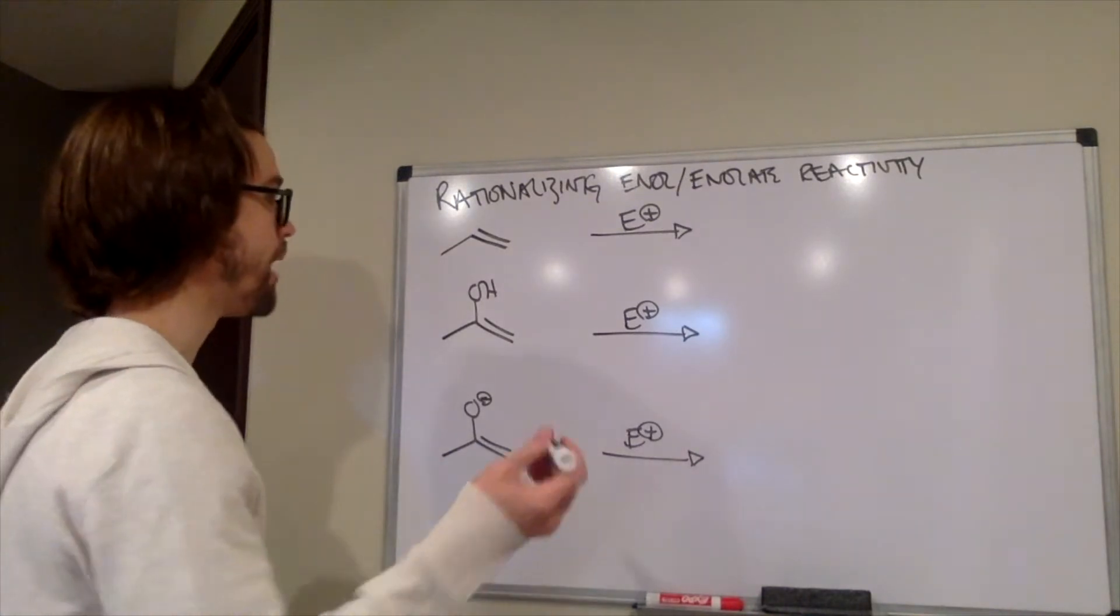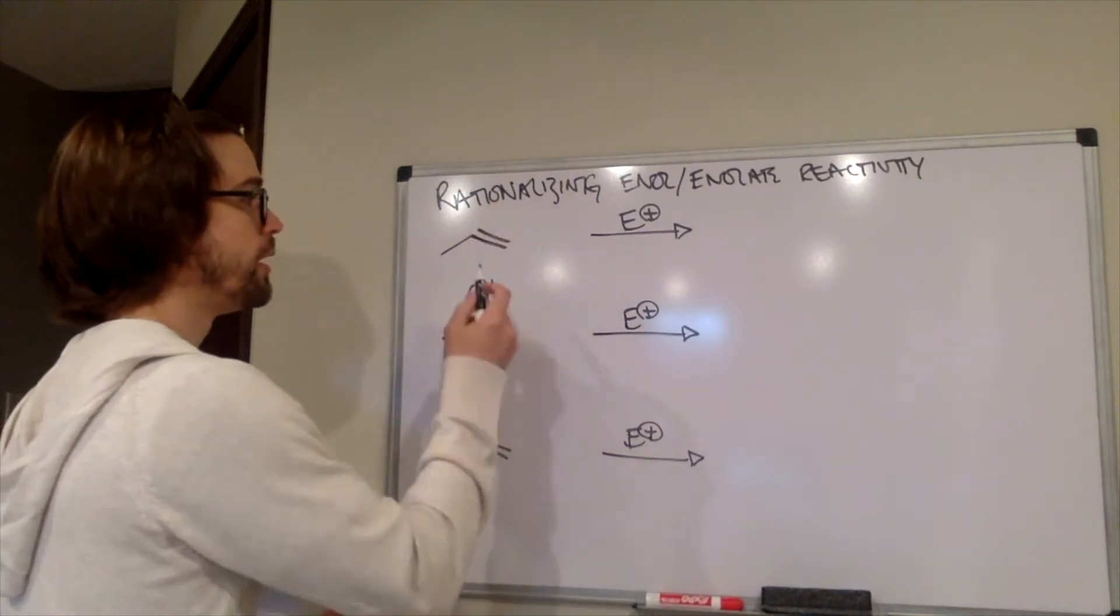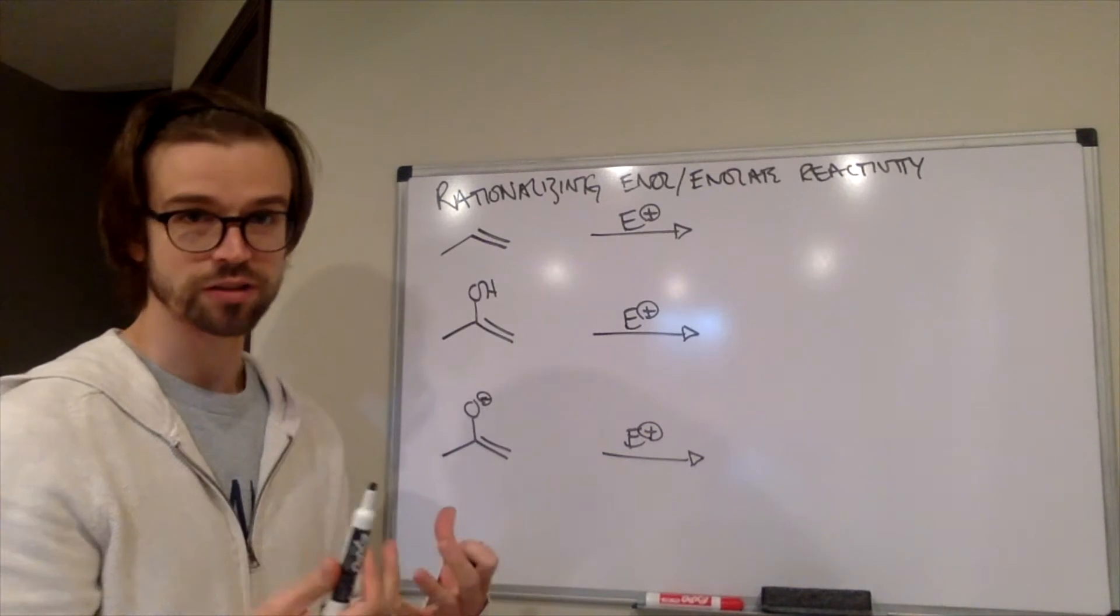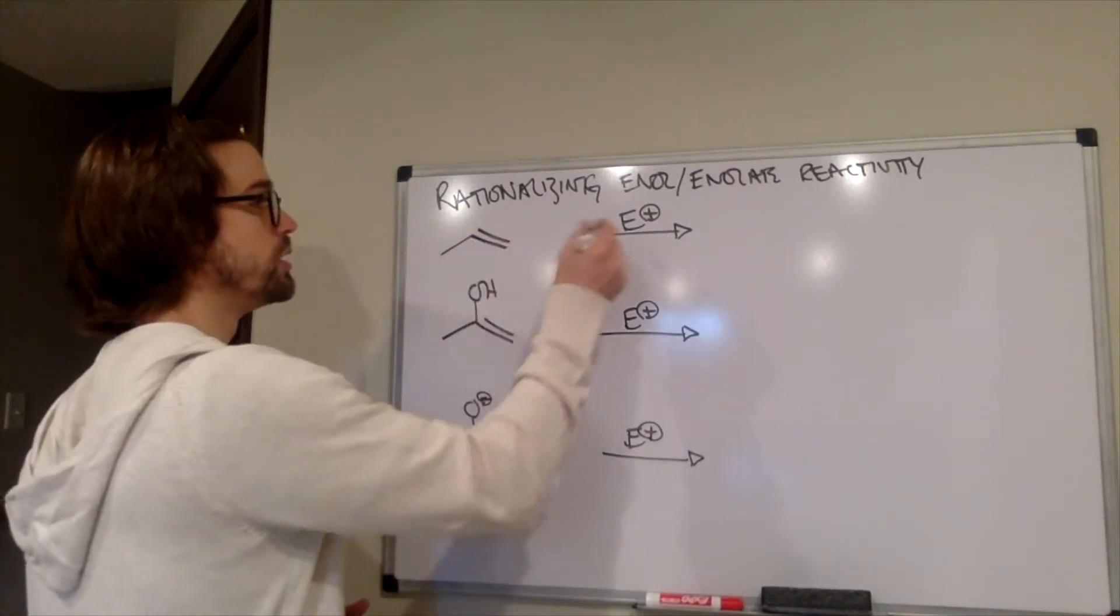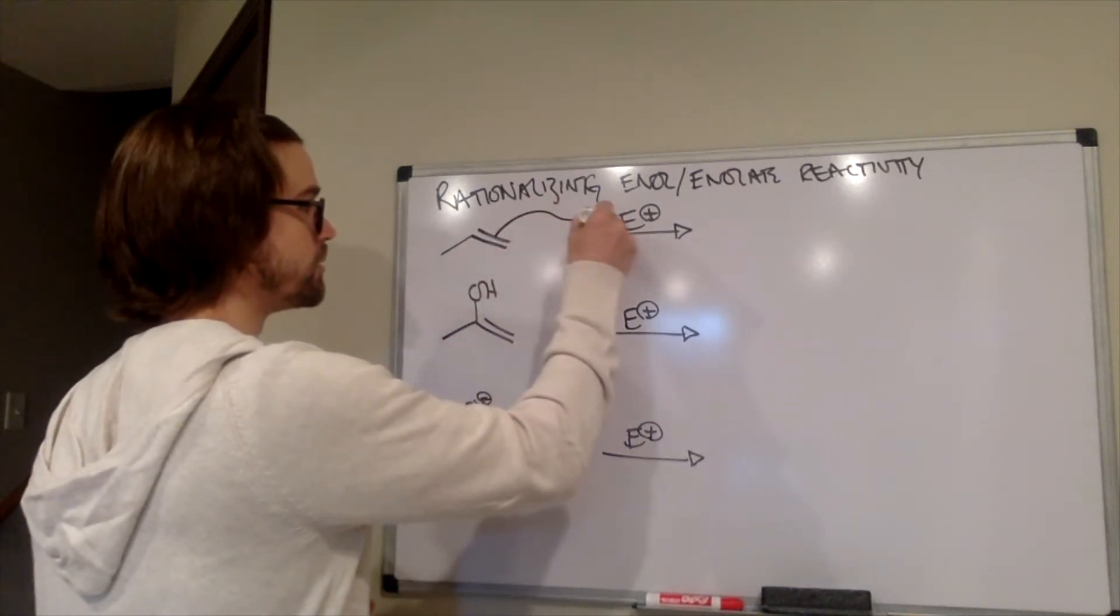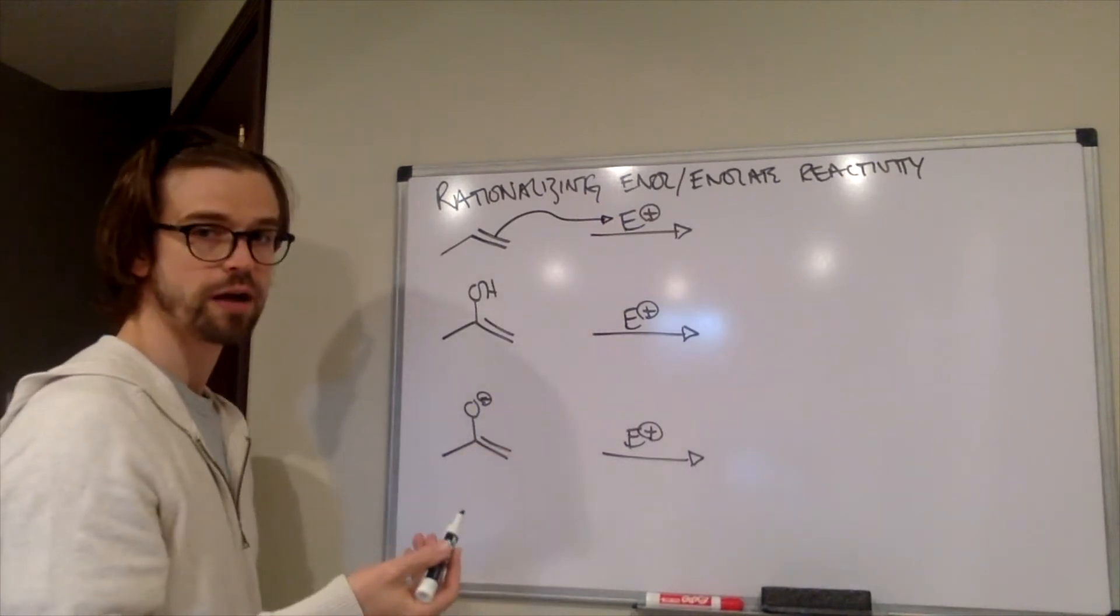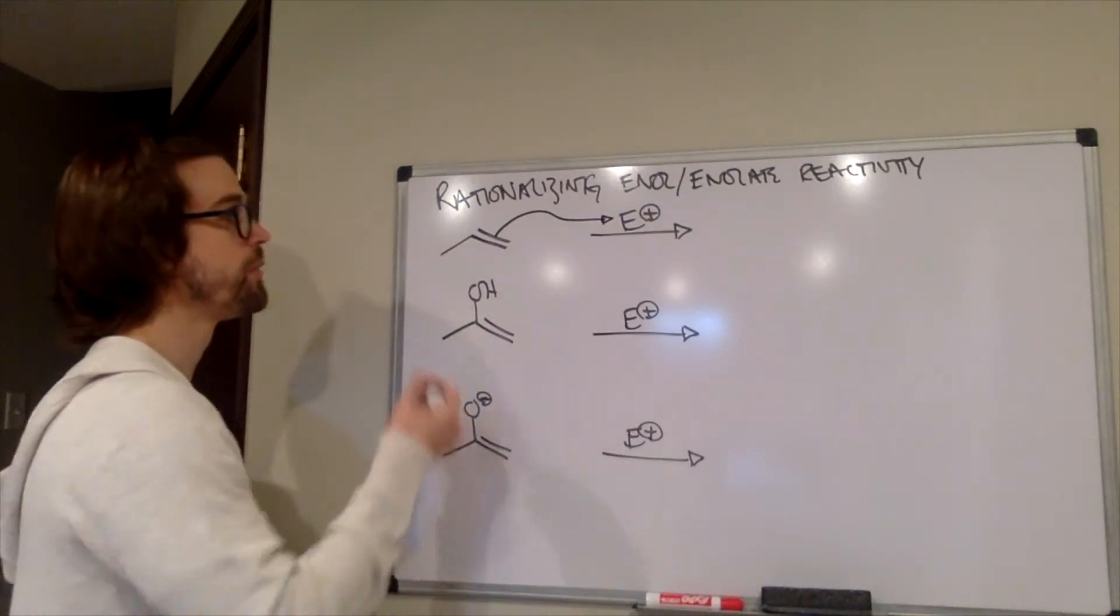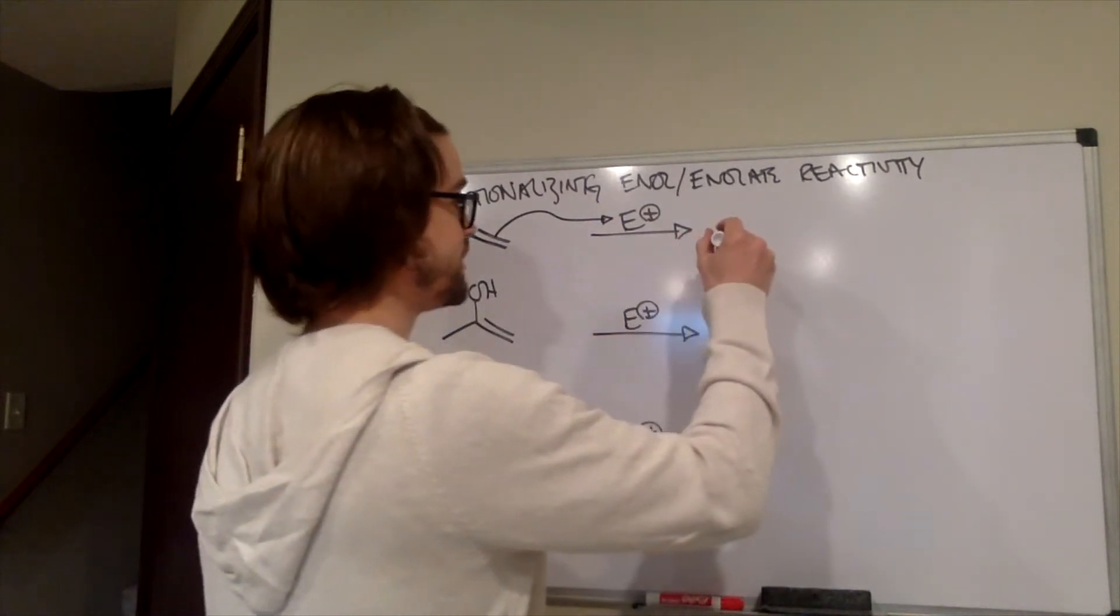How do electrophiles add to pi bonds? Well, the pi bond has negative electrons, and if those negative electrons are attracted to the partially positive electrophile, or the fully positive electrophile, so that pi bond just adds to that.